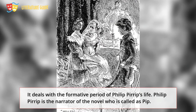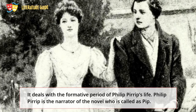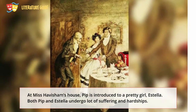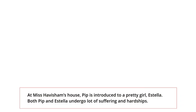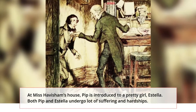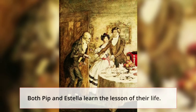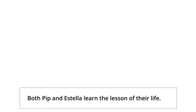Great Expectations deals with the formative period of Philip Pirrip's life. Philip Pirrip is the narrator of the novel, who is called Pip. He is a village boy who dwells with his bad-tempered sister. At Miss Havisham's house, Pip is introduced to a pretty girl Estella. Both Pip and Estella undergo a lot of suffering and hardships. Great Expectations comments on psychological and cultural conflicts, and both Pip and Estella learn the lesson of their life.